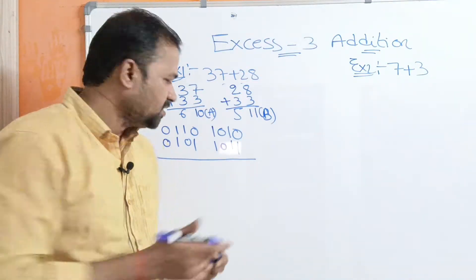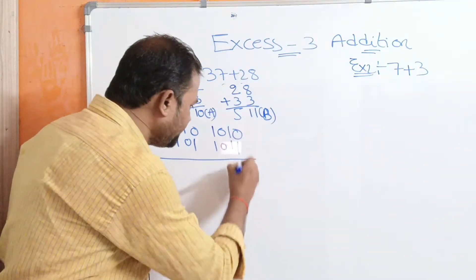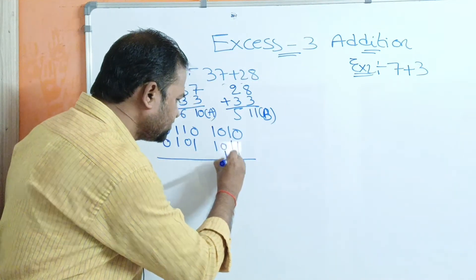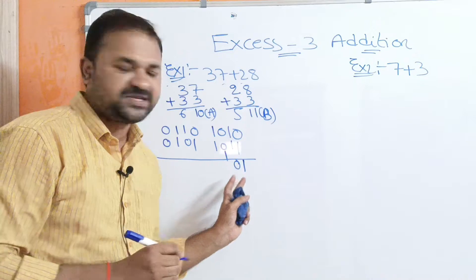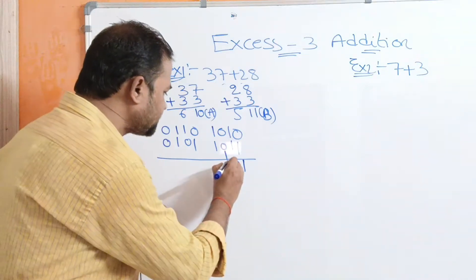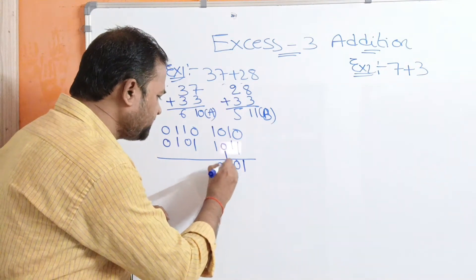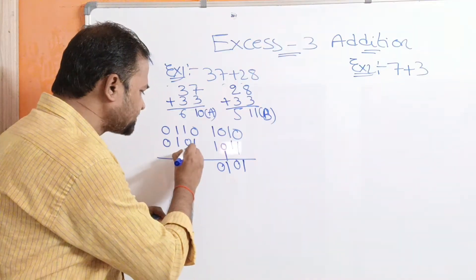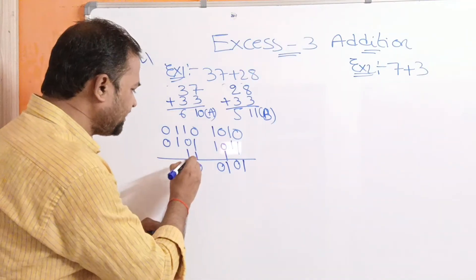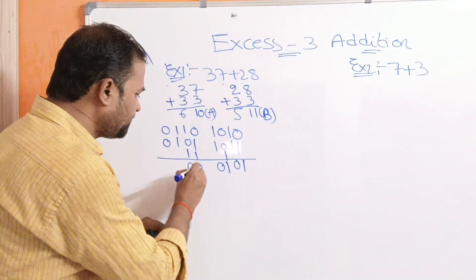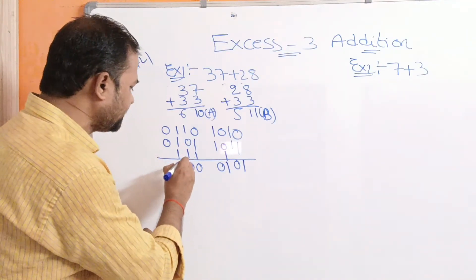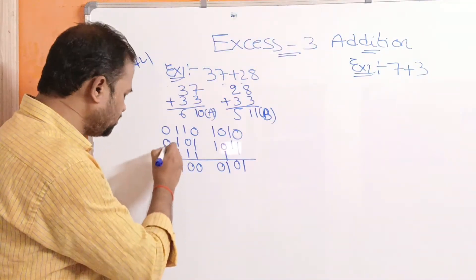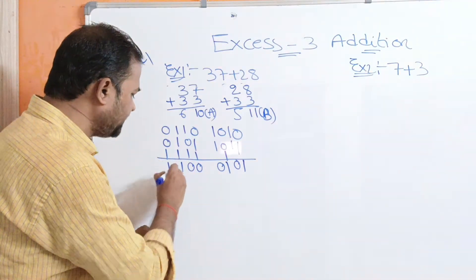Now we add the two XS3 binary numbers using simple binary addition rules: 0 plus 1 is 1; 1 plus 1 is 0 with carry 1. Working through each bit: 0 plus 1 is 1; 0 plus 1 plus carry 1 is 0 with carry 1; 1 plus 1 plus carry 1 is 1 with carry 1; 1 plus 0 plus carry 1 is 0 with carry 1; giving the sum 1 1000 0001.